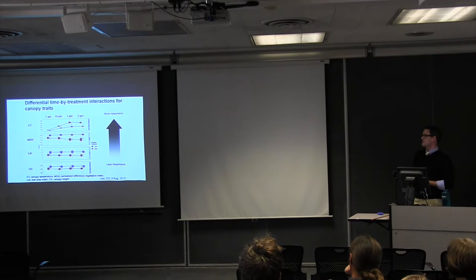And so this just shows us that the canopy temperature and NDVI are extremely responsive traits in terms of the soil moisture environment that they're in, as well as the actual air temperature. And so this is kind of what we're after in terms of when we do our genetic analysis, we're using these four time points to try and determine what genes are driving this response in terms of response to the environment as it progresses across the day.